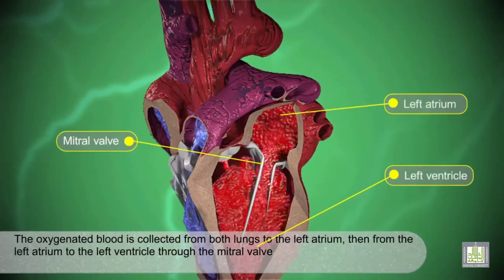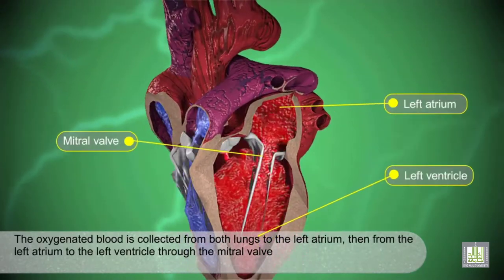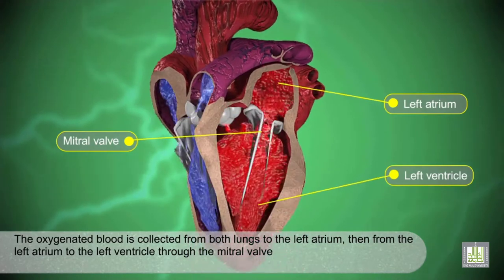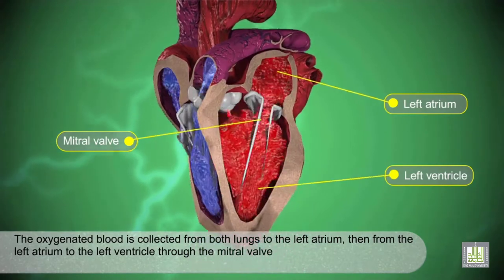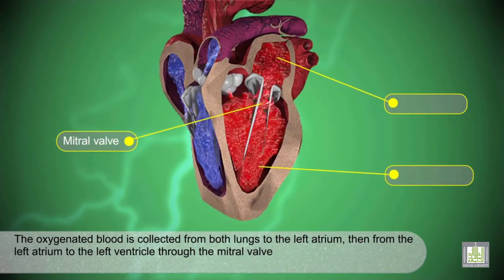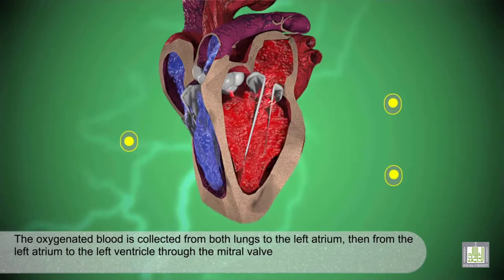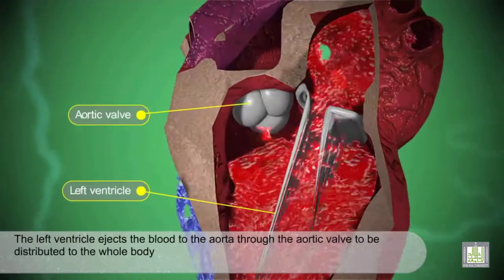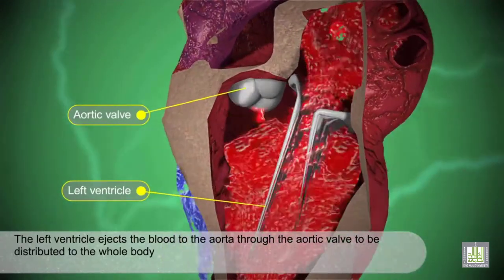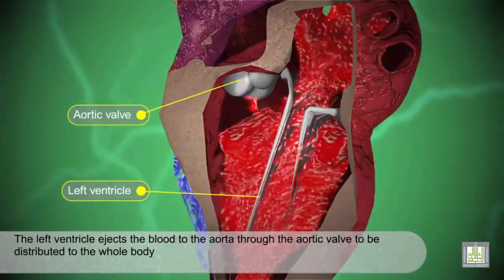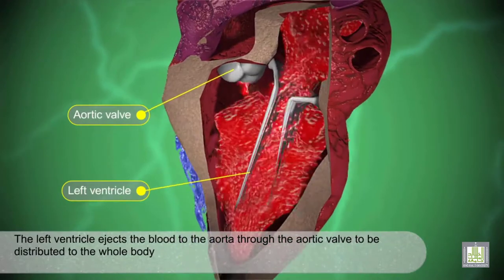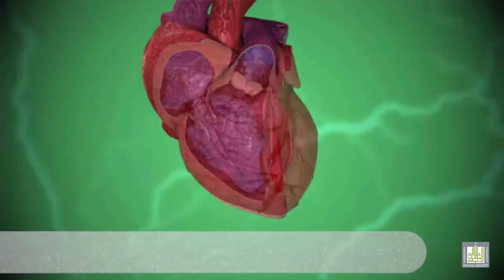The oxygenated blood is collected from both lungs to the left atrium, then from the left atrium to the left ventricle through the mitral valve. The left ventricle ejects blood to the aorta through the aortic valve to be distributed to the whole body.